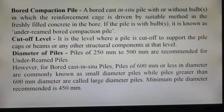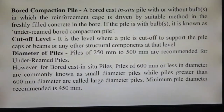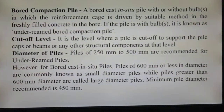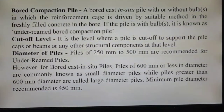A bored compaction pile is a bored cast in-situ pile with or without bulbs in which the reinforcement cage is driven by a suitable method into freshly filled concrete in the bore. If the pile has bulbs, it is known as an under-reamed bored compaction pile. The cut-off level is the level where a pile is cut off to support the pile caps, beams, or other structural components above it. It is usually related to the diameter of the pile but in certain cases is decided by the structural engineer as per the requirements of that structure.